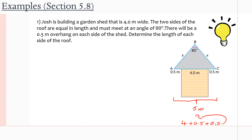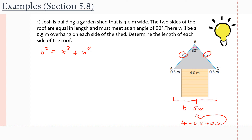Let's call the base side b, so b equals five meters — that's the side opposite to the angle we're using, so it goes on the left side of the equation. We get b² equals the other two sides squared: x² plus x², that's one side plus the other side.